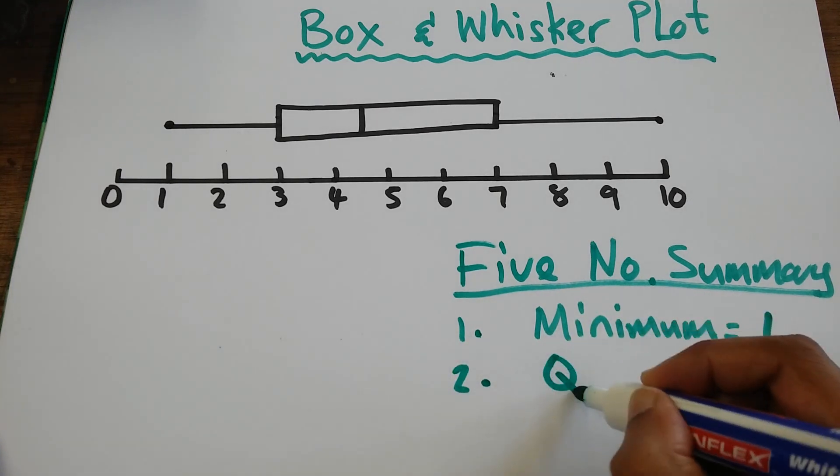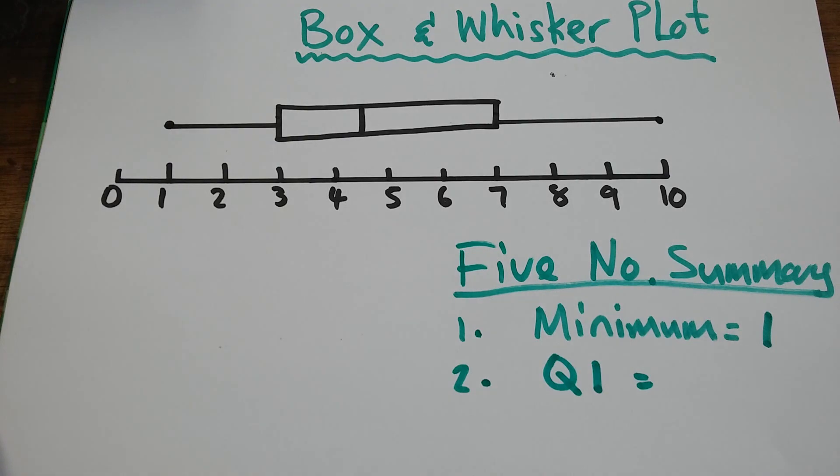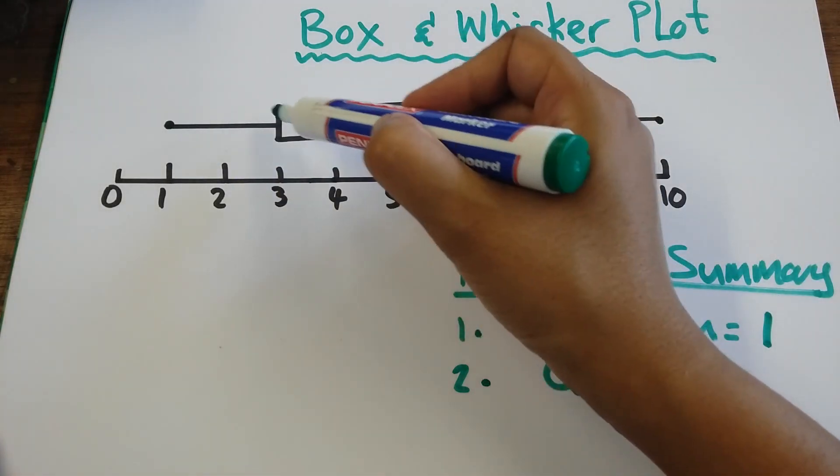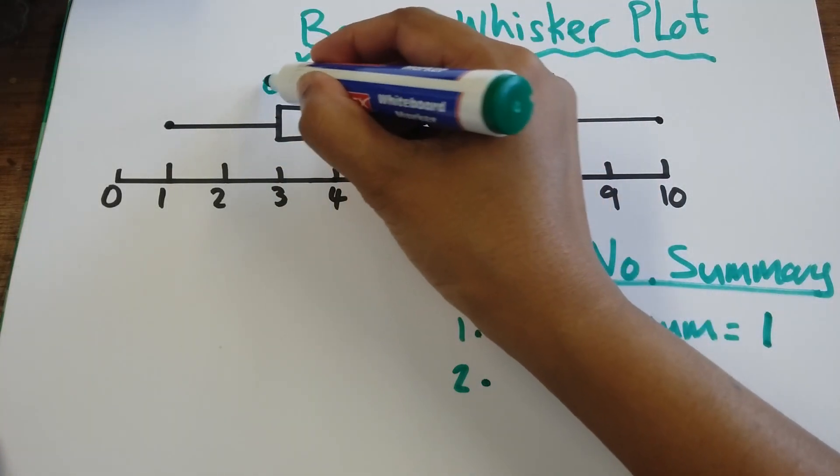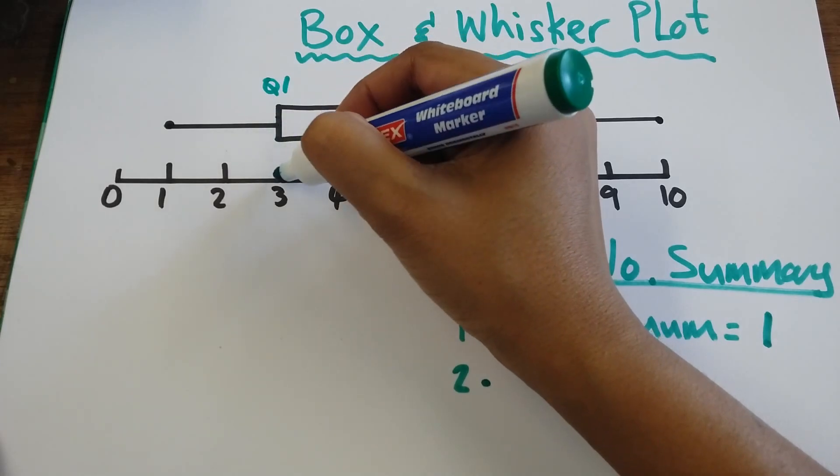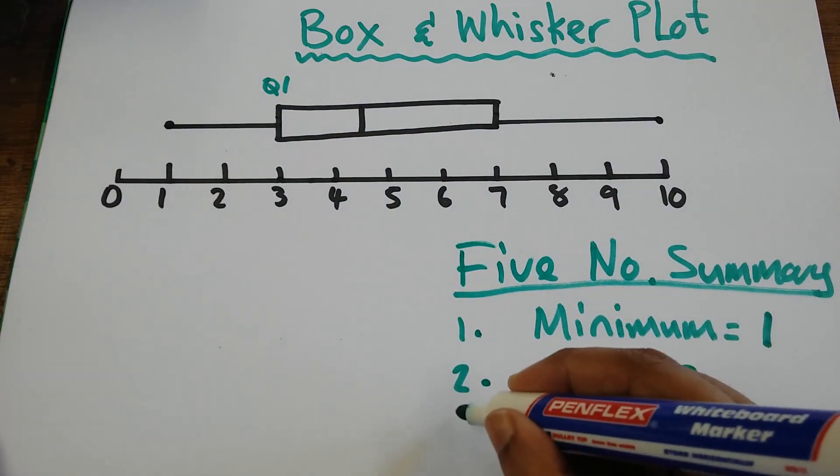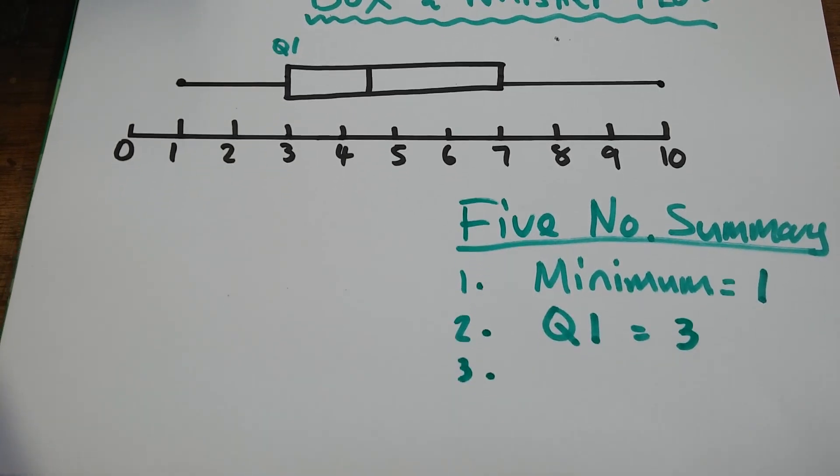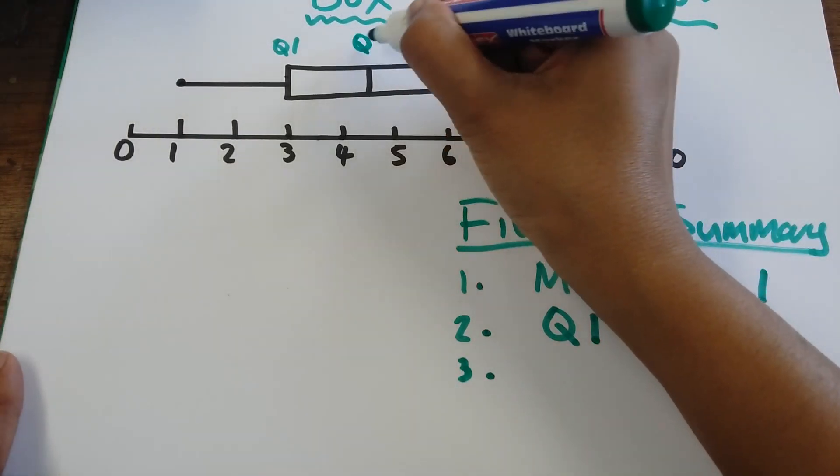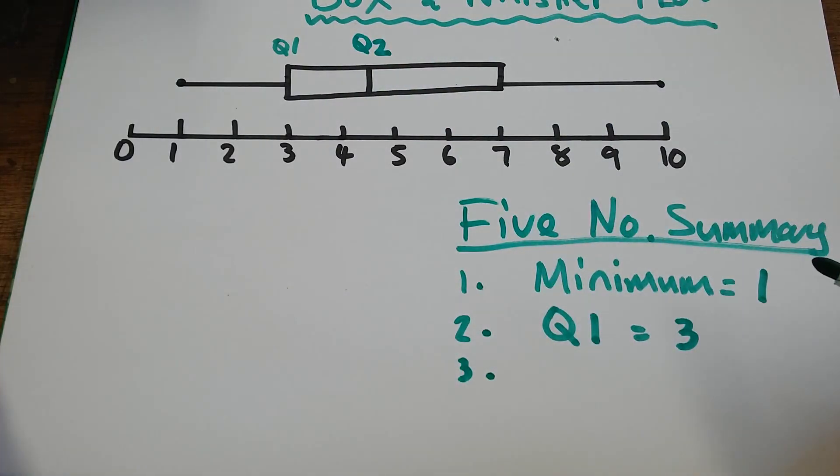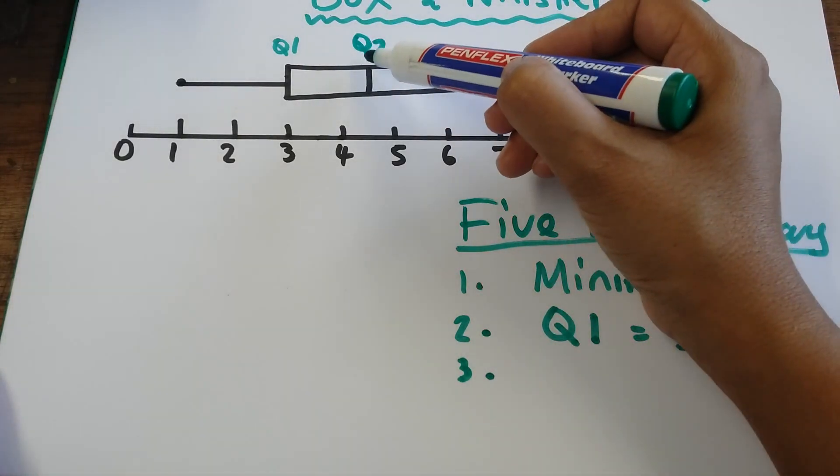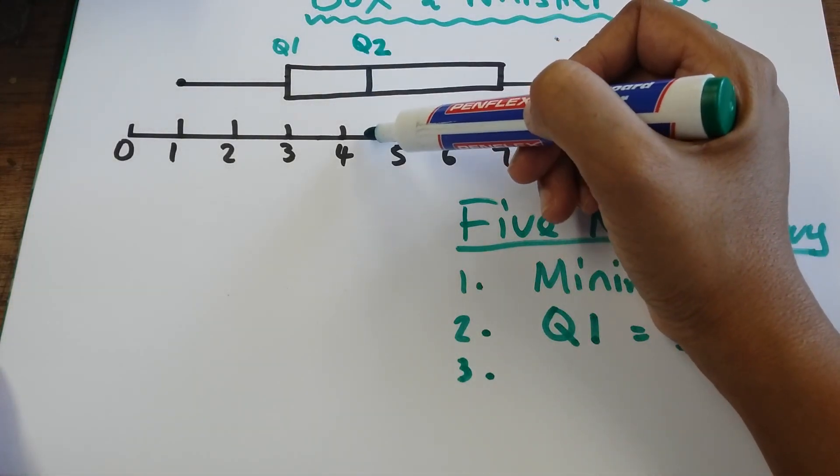Secondly, I'm going to look at quartile one. So quartile one is here, Q1. I go down to my scale. Q1 is equal to three. Then I'm at Q2, which is my median. Again, using my scale, it is midway between four and five, which means Q2 is equal to four and a half.